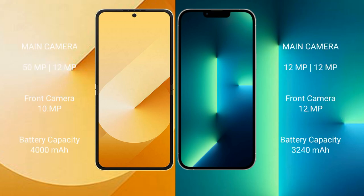Samsung Galaxy Z Flip 6 has a dual rear camera setup: 50 MP plus 12 MP, and a 10 MP front camera. iPhone 13 has a dual rear camera setup: 12 MP plus 12 MP, and a 12 MP front camera. Samsung Galaxy Z Flip 6 has a 4000 mAh battery with 25W fast charging support; iPhone 13 has a 3240 mAh battery with 20W fast charging support.